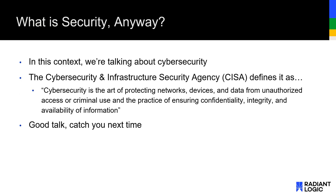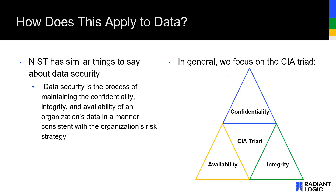To start, let's talk about what security is to us. For the sake of this talk, we're talking about cybersecurity. CISA defines it as: cybersecurity is the art of protecting networks, devices, and data from unauthorized access or criminal use, and the practice of ensuring confidentiality, integrity, and availability of information. There's a whole other rabbit hole to go down — so how does this apply to data and data security?